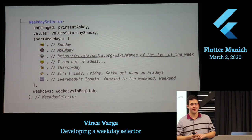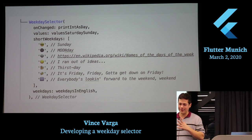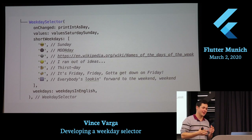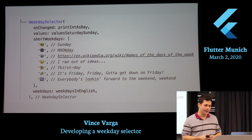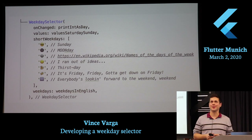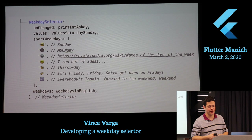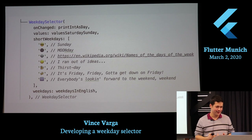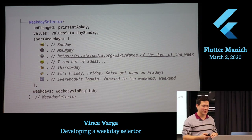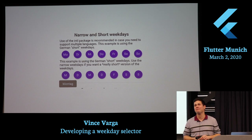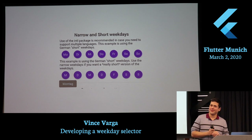I also thought about internationalization, because we live in Germany. If you work on an application you need to think about supporting different strings and different behavior. If you really want to, you can even use emojis for the weekdays — Sunday, Monday, and the alien is for Tuesday, the Martian. I kind of ran out of ideas after that.